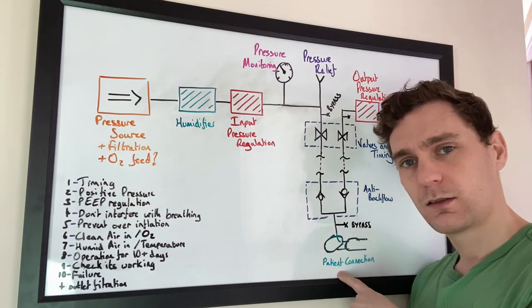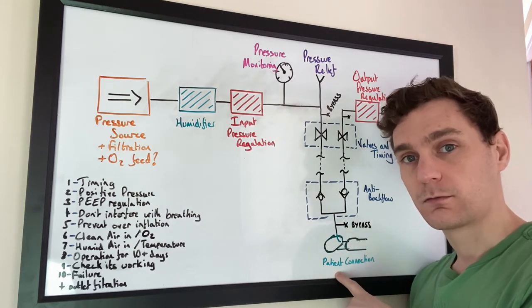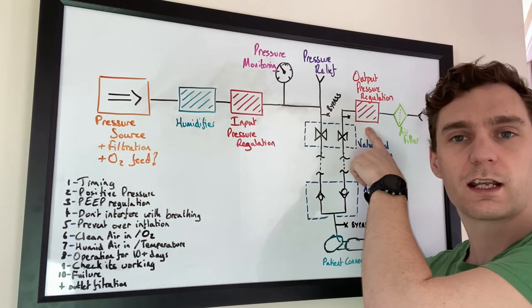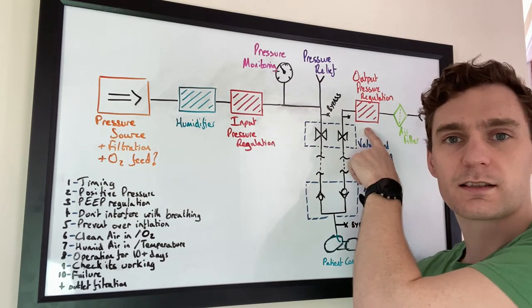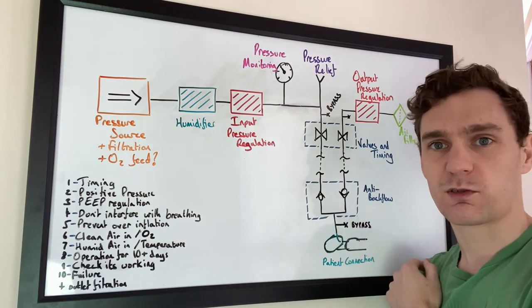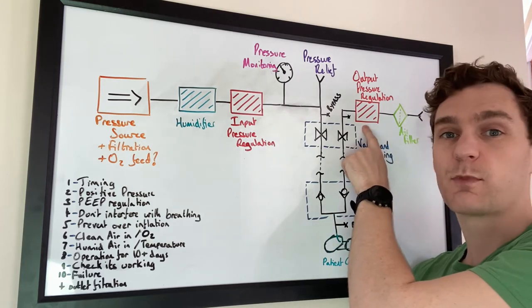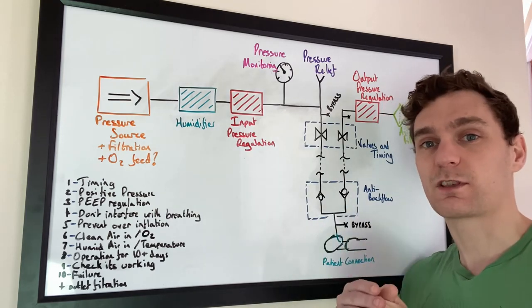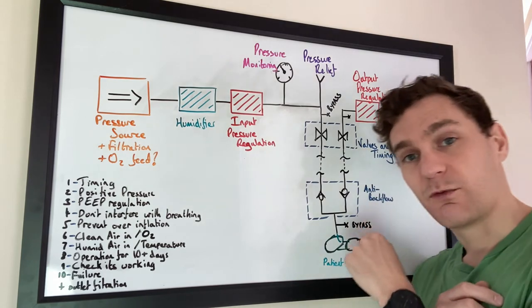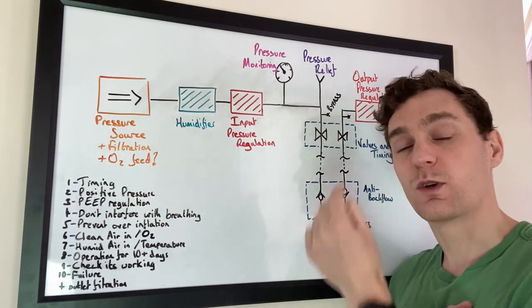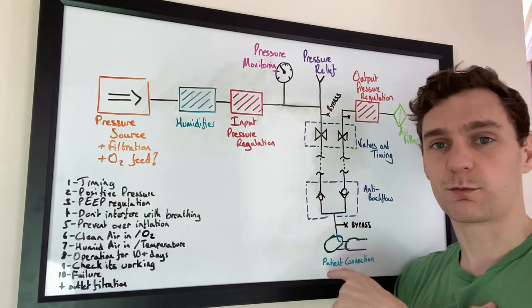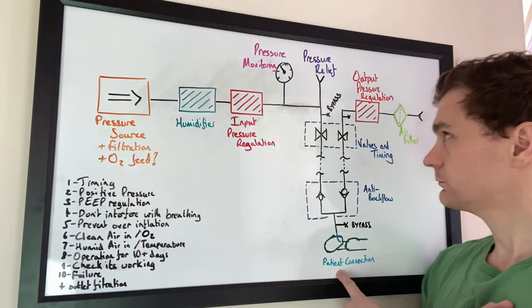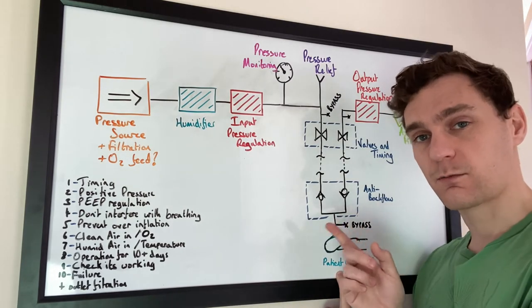Here we have the patient connection. The assumption here is that it is intubation and the reason that is important is because of this. So right here this output pressure regulation is to maintain PEEP, the positive end expiratory pressure. So this is holding back a pressure inside the lung, preventing this lung from deflating and the alveoli from collapsing. If we weren't intubating, we would have to continue to apply a positive pressure rather than just holding back a pressure. That's called EPAP, end positive airway pressure. So that would be a different system. This system is only for intubation.